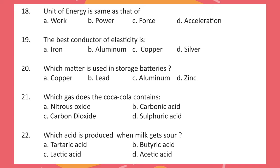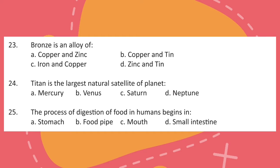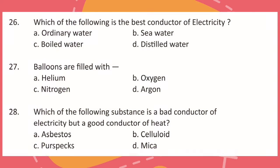Question 22. Which acid is produced when milk gets sour? Question 23. Bronze is an alloy of? Question 24. Titan is the largest natural satellite of planet what? Question 25. The process of digestion of food in humans begins in? Question 26. Which of the following is the best conductor of electricity?